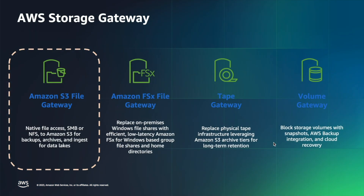The AWS Storage Gateway consists of four different gateway types: Amazon S3 file gateway, Amazon FSx file gateway, tape gateway, and volume gateway. Today we'll be focusing on the Amazon S3 file gateway, which provides native file access — SMB or NFS — to Amazon S3 for backups, archives, and ingestion for data lakes.